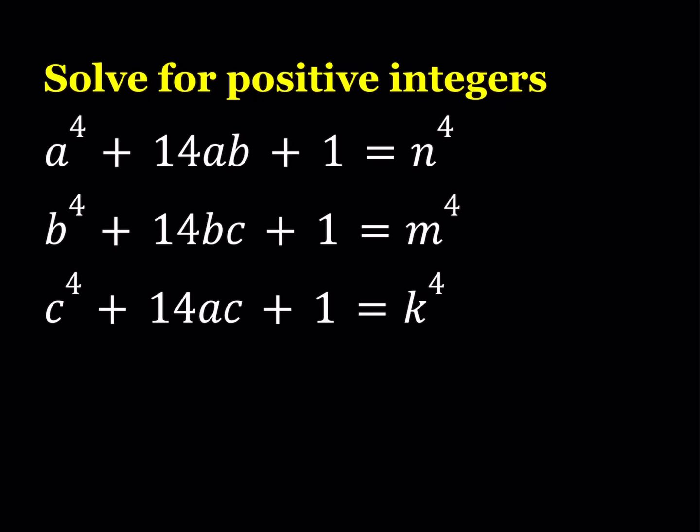Hello everyone. In this video we're going to be solving a system of equations for positive integers. This problem is from Soros Math Olympiads from a long time ago. I don't remember which year, but I have seen it online. Anyways, we're going to be looking for positive integers. We have six variables here, by the way, ABC and NMK.